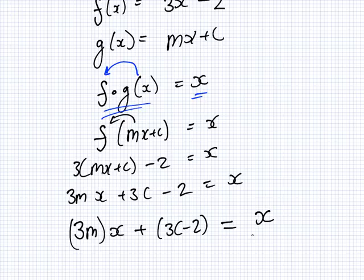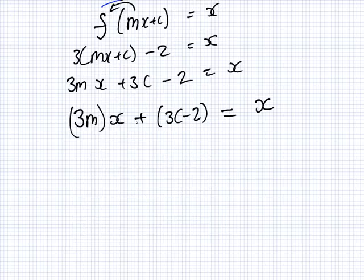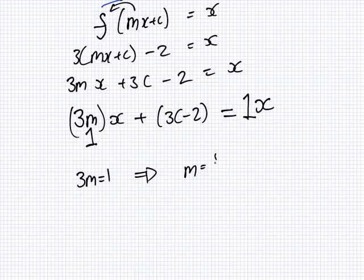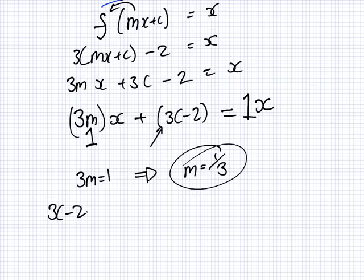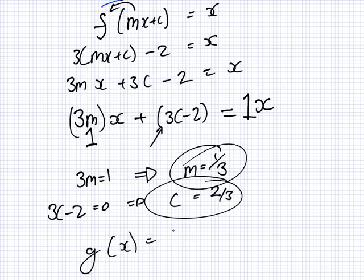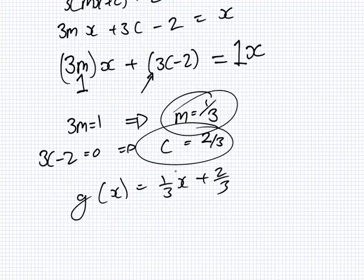You were close but not quite there. We want to make these two sides the same. We only have a 1x, so this piece here must be 1 - meaning 3m must be 1, so m must be 1 over 3. That gives us the M. And then looking here, what do we want this piece (3c minus 2) to be? Yeah, you want it to be 0 because you don't have anything else. So that means c should equal 2 over 3. So the function g(x) equals one-third x plus two-thirds.